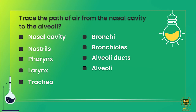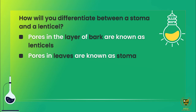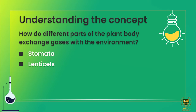Next short question: how do you differentiate between a stoma and a lenticel? Stoma (singular; plural stomata) is an opening present between the guard cells in leaves. Lenticels are pores in the layer of bark — jo bark yaani darakht ki chaal hoti hai, us mein jo surakh hote hain unhe lenticel kehte hain.